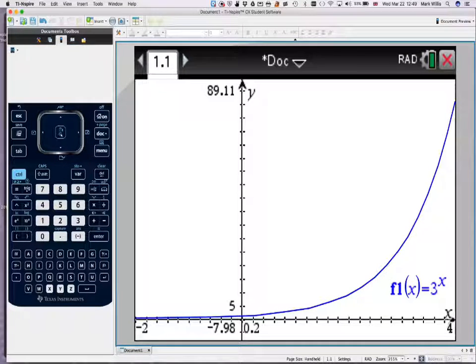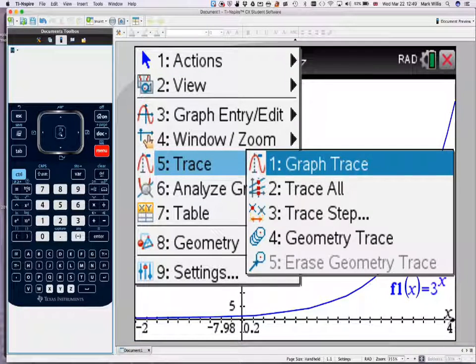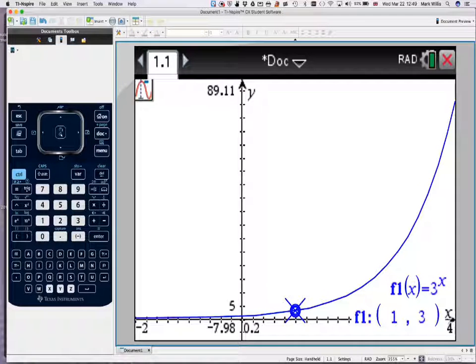Okay, so now I need to find what the range is going to be. To do that, one way to do that on the GDC is to go to menu, go to number 5, trace, graph trace, and then here, hit in the lower value for the domain, which is minus 1.